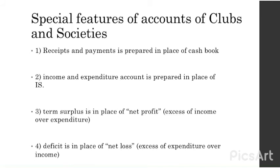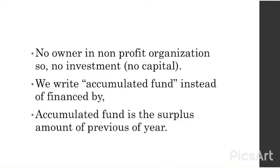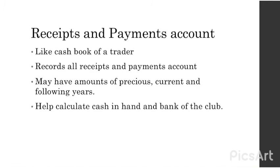The deficit is in place of net loss — deficit means an excess of expenditure over income. There is no owner in a non-profit organization, therefore there is no capital invested into the business. We write accumulated fund instead of 'financed by' in the balance sheet. The accumulated fund is the surplus amount of the previous years.